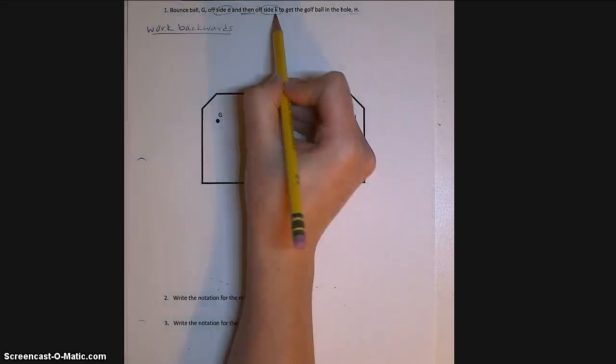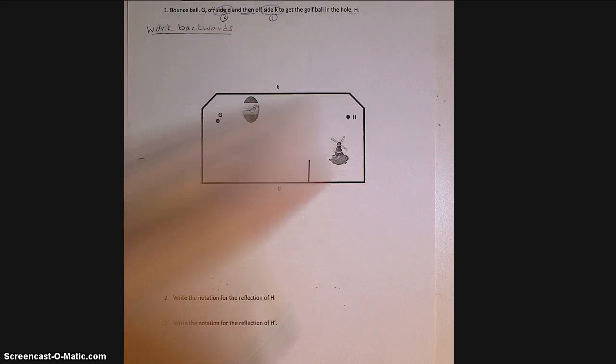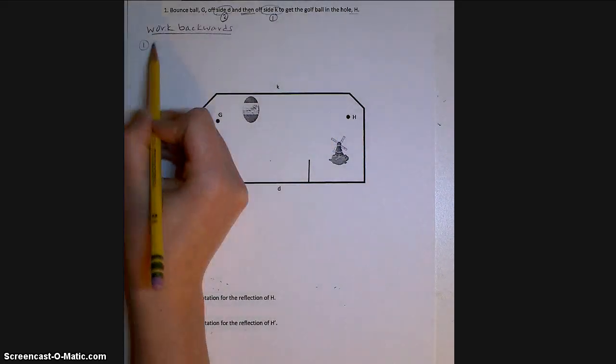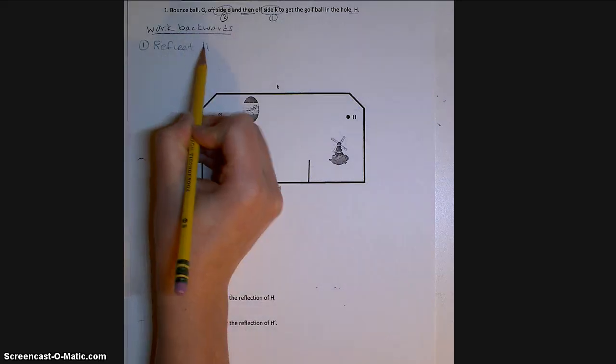So that means I have to reflect over side K first, then side D second. Also, because we're working backwards, I know I need to start by reflecting the ending point H.